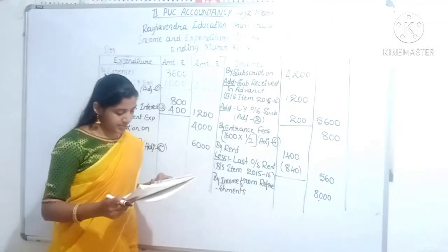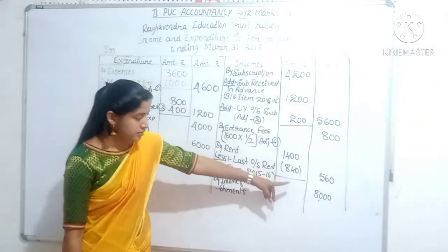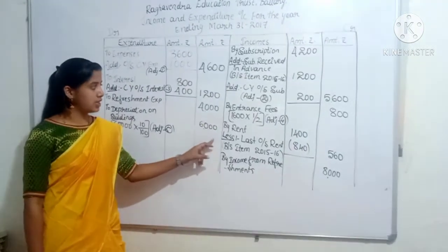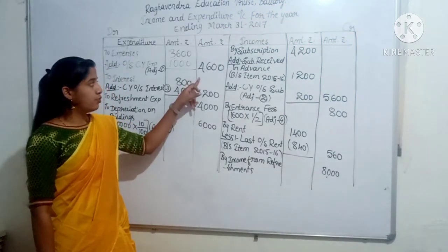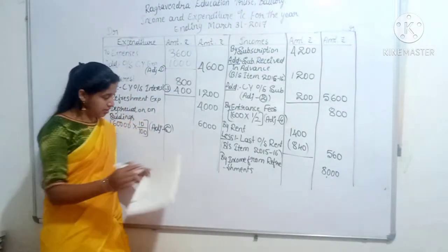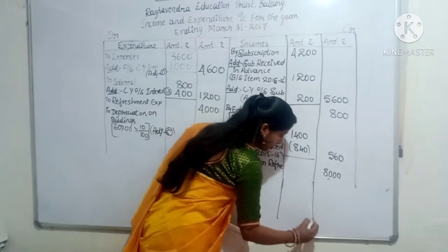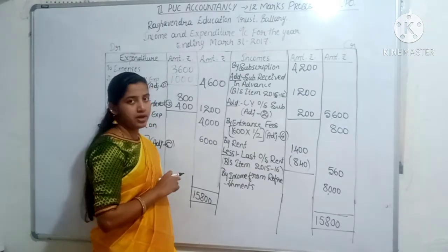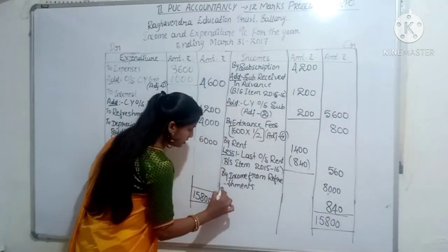Depreciation on building: total building Rs. 60,000, rate of depreciation 10%, so 60,000 × 10 ÷ 100 = depreciation amount Rs. 6,000. Adjustment number 5. Totaling both sides: expenditure side total highest value Rs. 5,600; items Rs. 800; 560; Rs. 8,000. Income side: Rs. 4,600; Rs. 1,200; Rs. 4,000; Rs. 6,000. Total comes to Rs. 15,800.